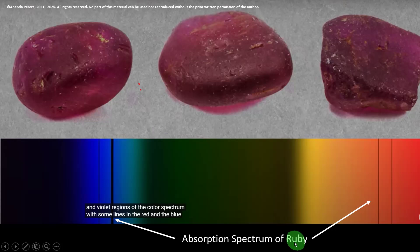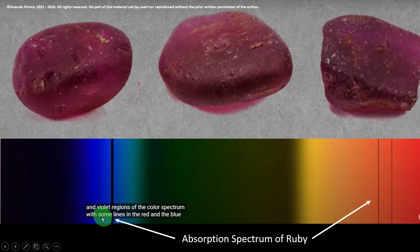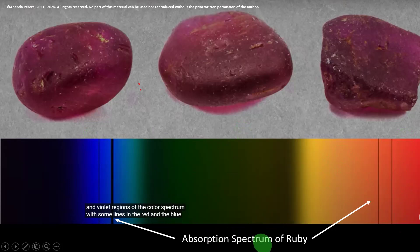The absorption spectrum of rubies looks like this — in the red area and violet regions you can see black absorption lines. In the blue and violet regions of the color spectrum there are lines, with a thicker line in the blue area and a thinner line also present. This is the ID of the absorption spectrum of ruby. Remember it. If we look through the spectrometer and we see these lines, we can identify that it is not spinel, it is not glass — it is ruby.